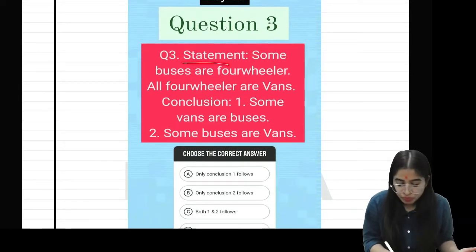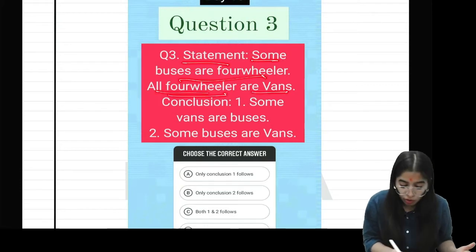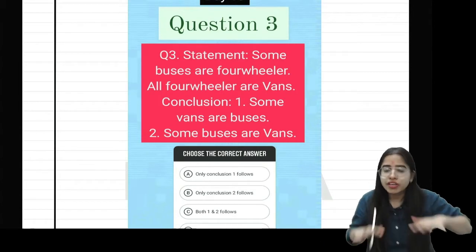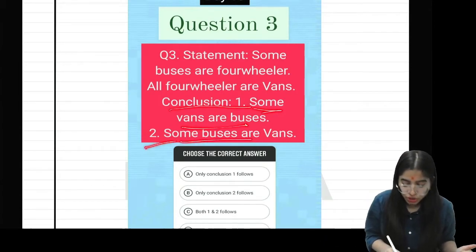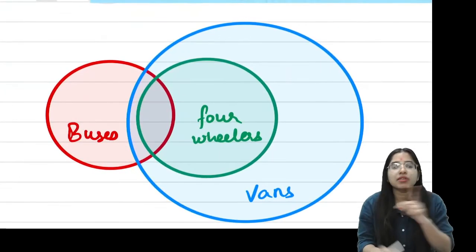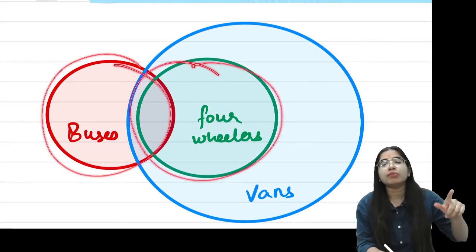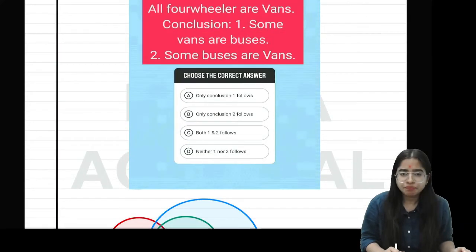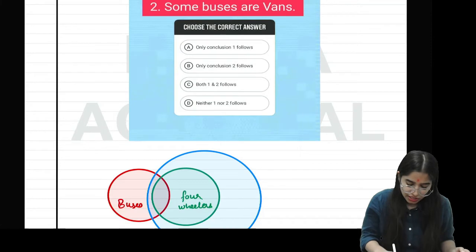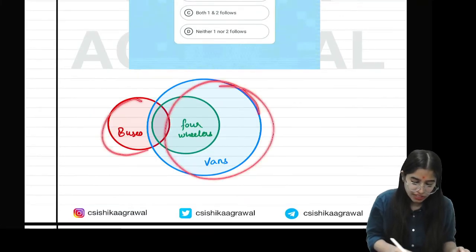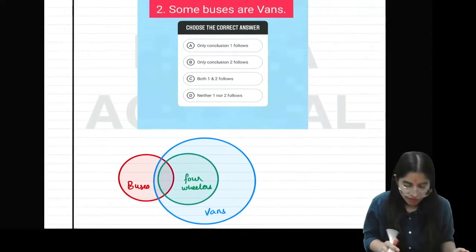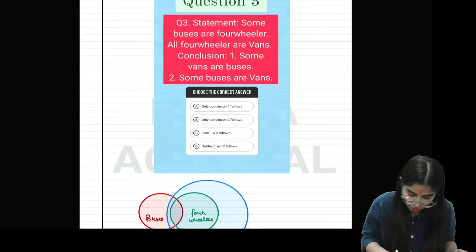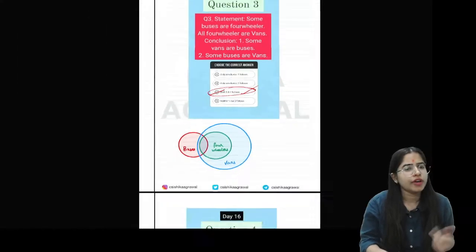Question 3 is a syllogism. The statements are: some buses are four-wheelers, all four-wheelers are vans. Based on this, you have two conclusions - conclusion 1: some vans are buses, and conclusion 2: some buses are vans. Let's see the answer. Drawing the Venn diagram with buses, four-wheelers, and vans: some vans are buses, yes this is true. Some buses are vans, yes this is also true. Both statements are correct, so the answer is option C: both conclusions 1 and 2 follow.